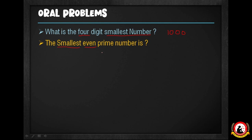Next question: what is the smallest even prime number? 2 is the smallest even prime number. It is the only even number that is also a prime number. 2 is the only even prime number.